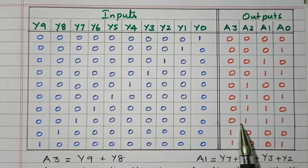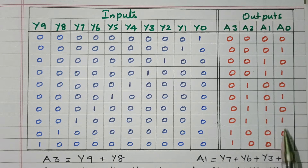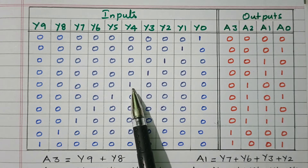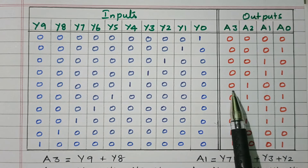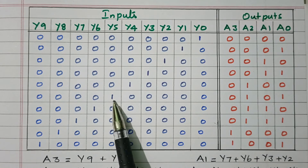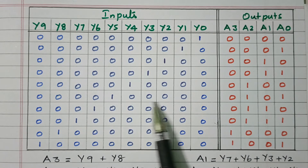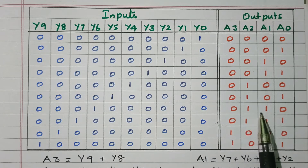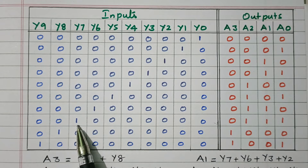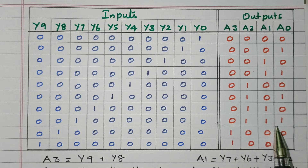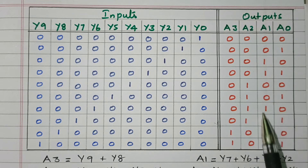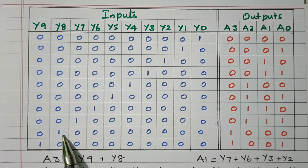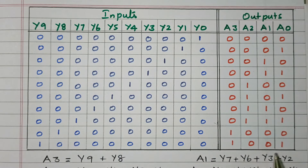The pattern repeats in groups of 4. If Y4 is 1 and others are 0, we get 0100. Y5 gives 0101. Y6 gives 0110. Y7 gives 0111 — so this is the first set of 4 and the next set of 4 outputs. If Y8 is 1, we get 1000. If Y9 is 1, we get 1001.